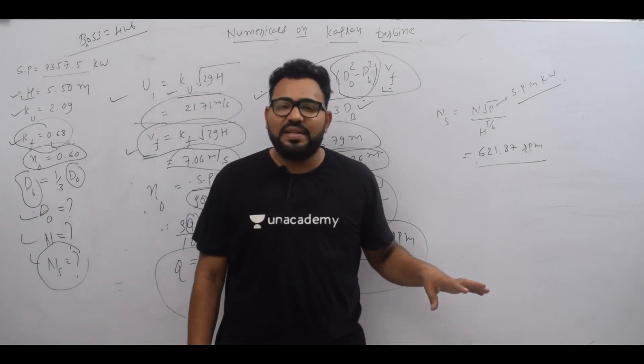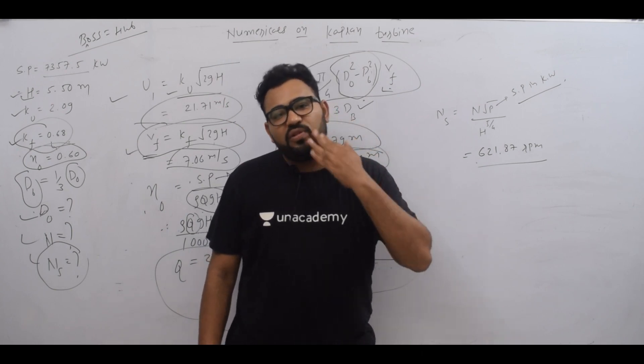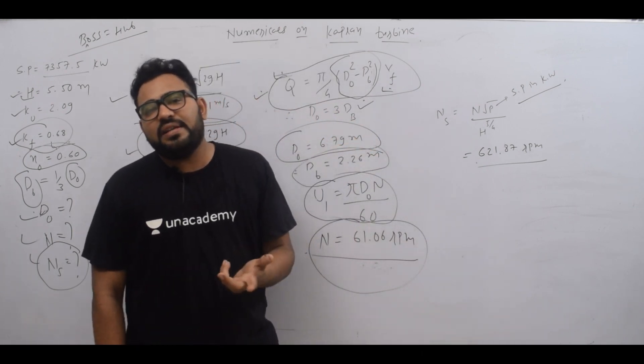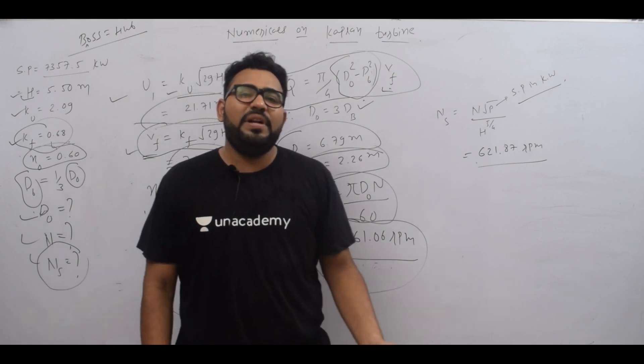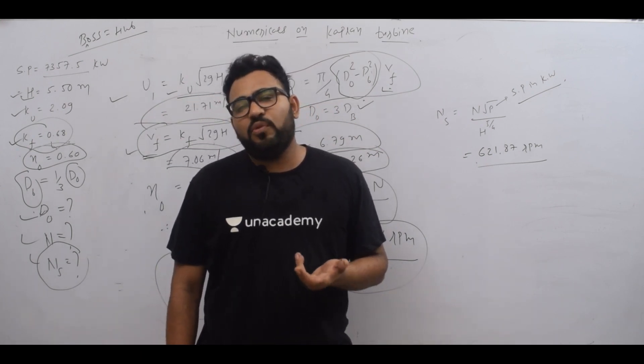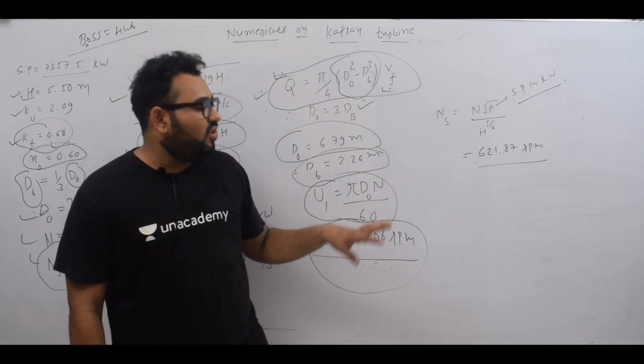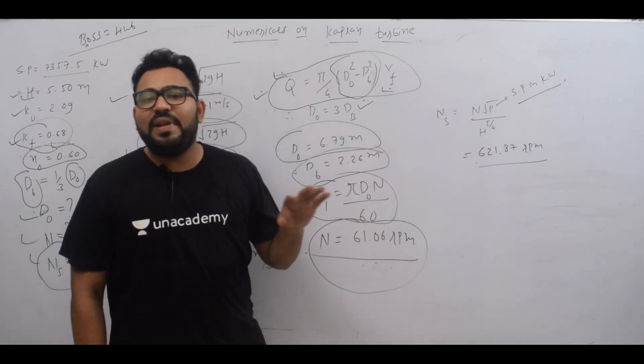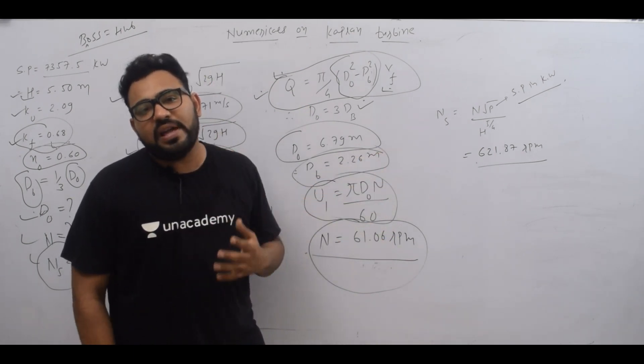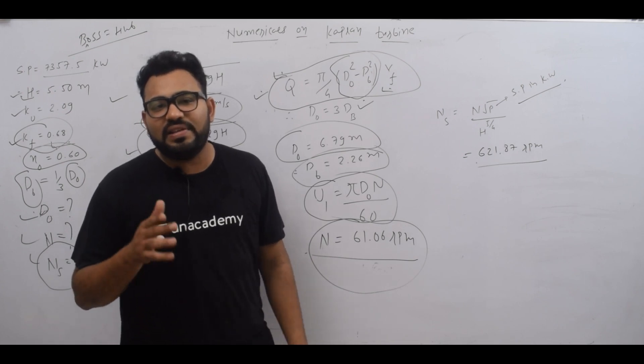That's how all Kaplan turbine problems work. Once the design aspect is covered, these examples become straightforward. You can also add velocity triangles to find alpha and beta angles. If you liked this video, please like and subscribe to our channel.